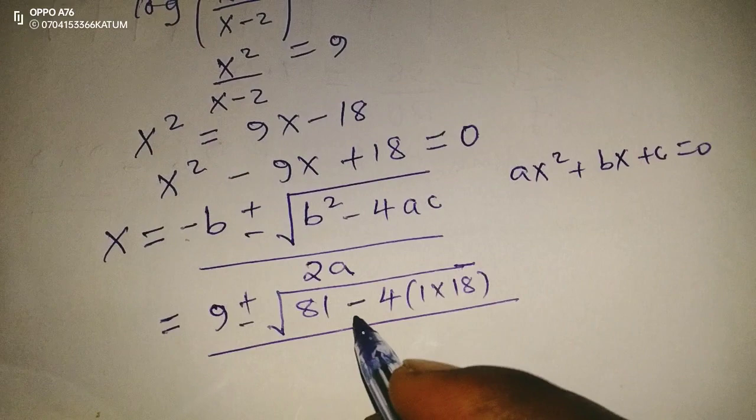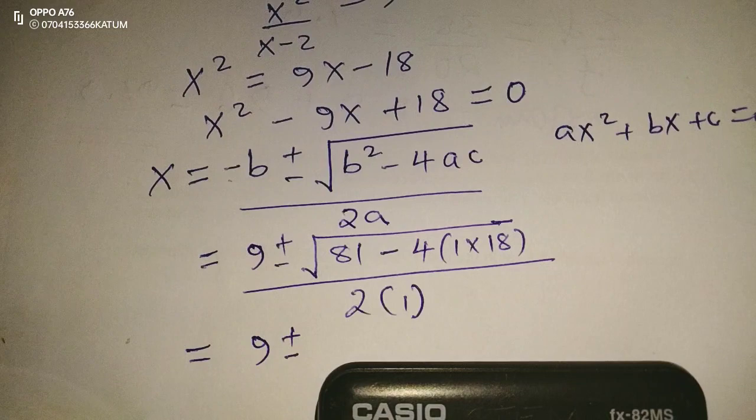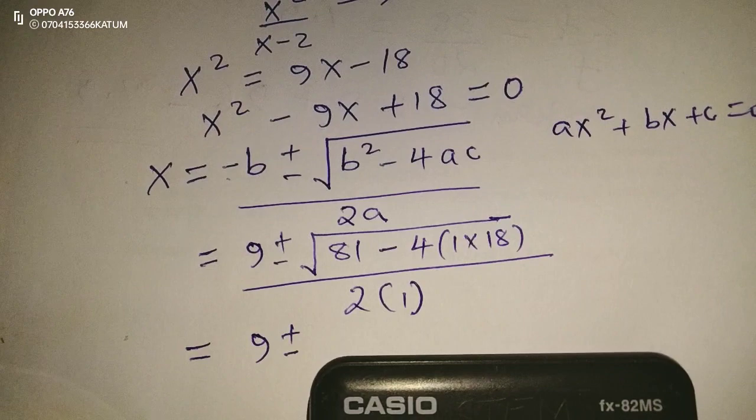Then we divide everything by 2 multiplied by 1. So this is going to be 9, plus or minus. When we take 4 by 18, it gives us 72.